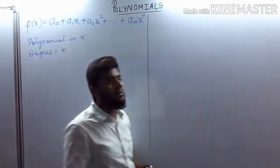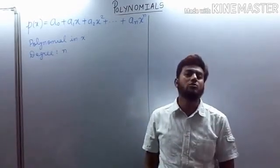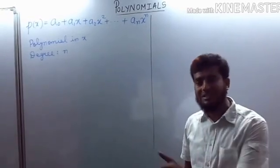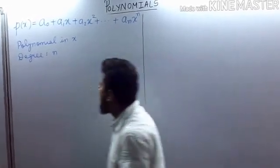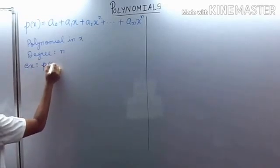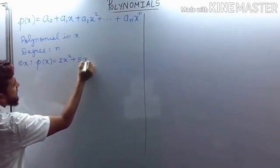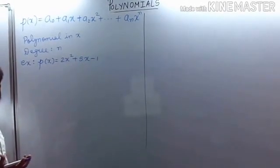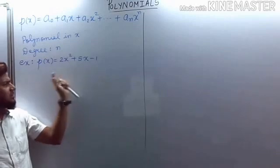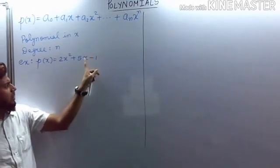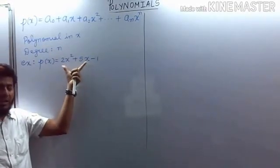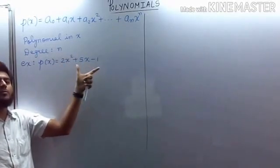Today we will take different polynomials and substitute different values of the variable x to see how a polynomial changes its value. We consider the example p(x) = 2x² + 5x - 1. First we check: the powers of x are 0, 1, and 2 — all whole numbers — so this is a polynomial, and its degree is 2.